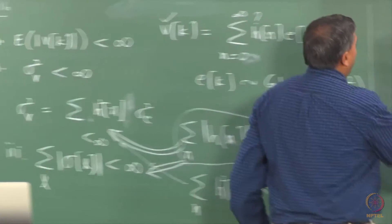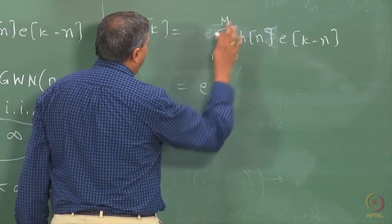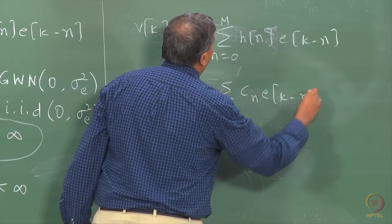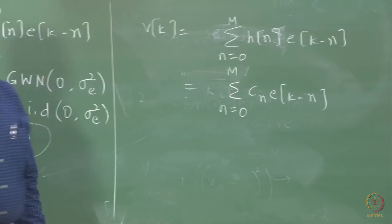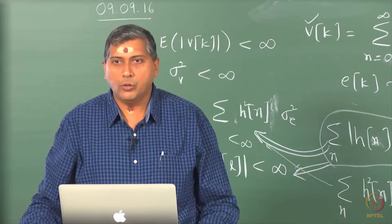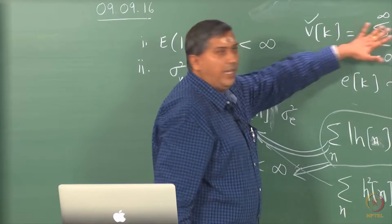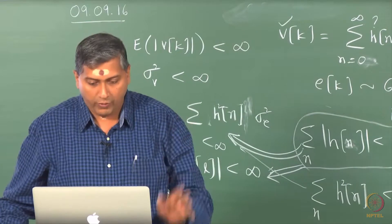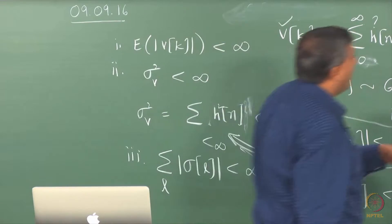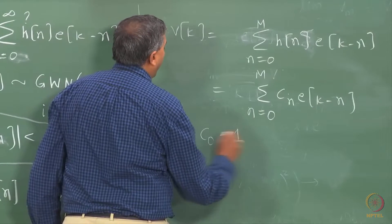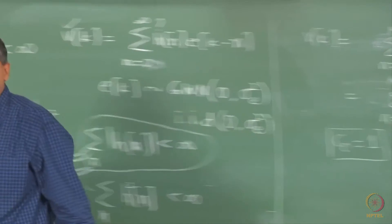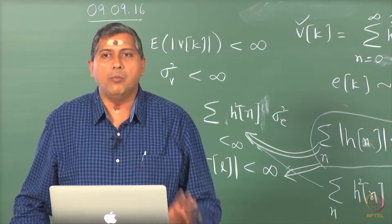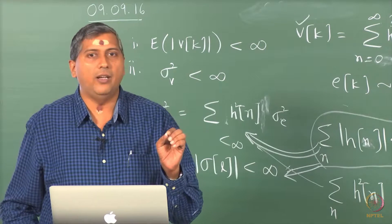Now, we will make a small change to the notation here. Whenever we talk of MA models of finite order, we will introduce this notation C_n instead of H_n for a reason I will tell you later on. We have moved from H to C. We will reserve this H generally for the linear random process infinite impulse response model. We will continue to use H of Q inverse only that we now change the notation. Now, there is another point that one should keep in mind that we restrict ourselves to C naught equals 1. This is an added restriction that we impose. Again, this is from an identifiability constraint that I will explain more in the next class.